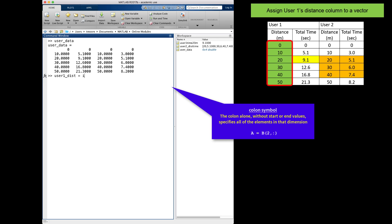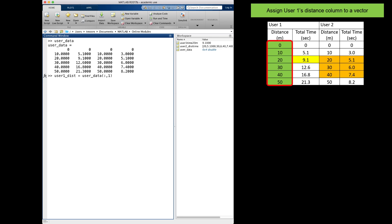On the right I will reference my original matrix user_data, open the parentheses, use a colon for all of the rows, then a comma, and a 1 for only column 1, and close the parentheses. When I hit enter, I have a new variable named user1_dist that is a column vector with the appropriate values.